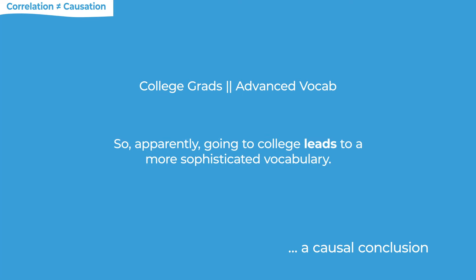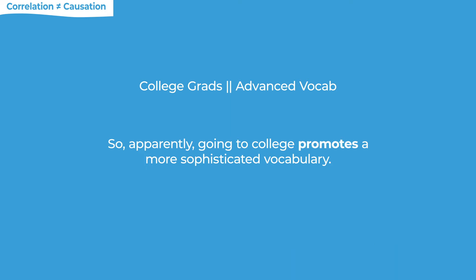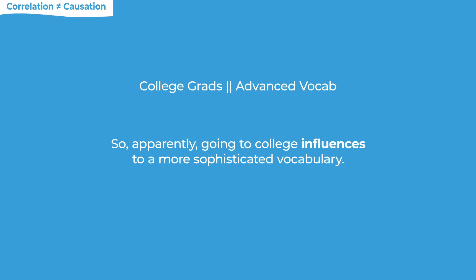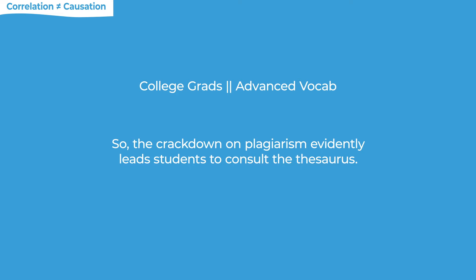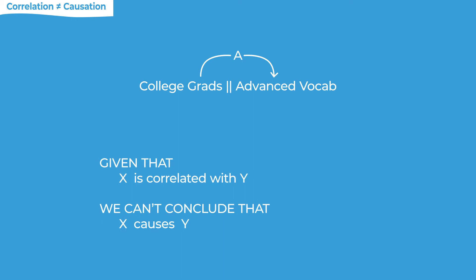When you see a correlation, it can be useful to picture those two factors appearing in parallel. There's some association — what is it? The author always assumes a causal one. With the college vocabulary example, the author would be saying that going to college causes the advanced vocab — it leads to it. Other verbs would be: it promotes, it contributes to, it influences. Sometimes causal conclusions don't explicitly name cause and effect — they just imply it. For example: 'the crackdown on plagiarism is making students check their thesaurus.' That's implying college's anti-plagiarism policy is building vocab. Given that x is correlated with y, you're not allowed to conclude that x causes y.